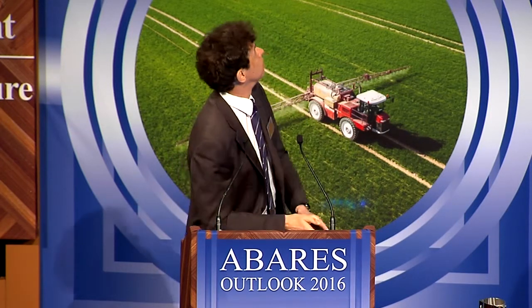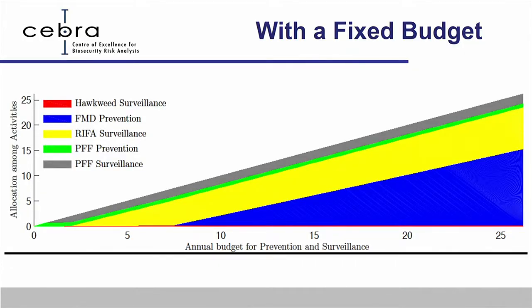Final point: what happens with a fixed budget? Instead of $26 million, you have something less. Rates of return vary considerably — you don't pick up FMD prevention until about $7 million is being spent. First expenditures go on fruit fly, which has the highest rate of return in this approach. When the budget is constrained — and it almost always is — choices become very severe: some things are out and some are in.